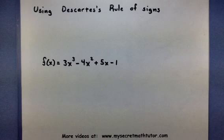So in the example that I've cooked up, I have 3x³ - 4x² + 5x - 1, and we're going to figure out how many of the possible zeros might be positive or negative.